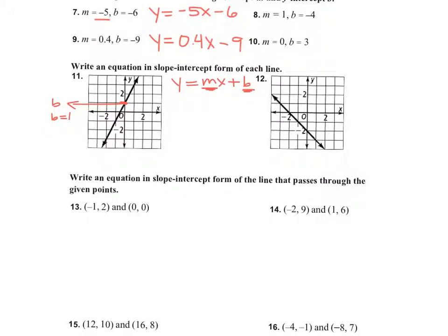Then you have to find the slope. The way you find slope on a problem like this is you pick another point that falls perfectly on the crossbars. So that could be this point right here, for instance. How do I find the slope between those two points? Think rise over run. Up 2 over 1 — so you go positive 2, positive 1. So my slope is 2 over 1, you can just call that 2.